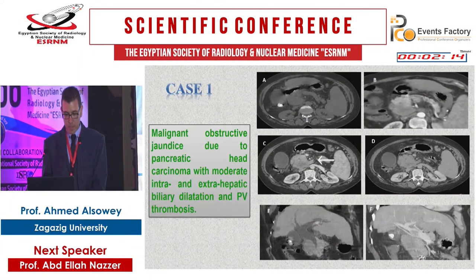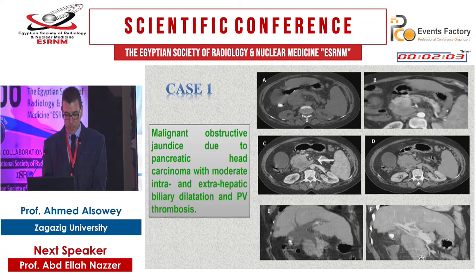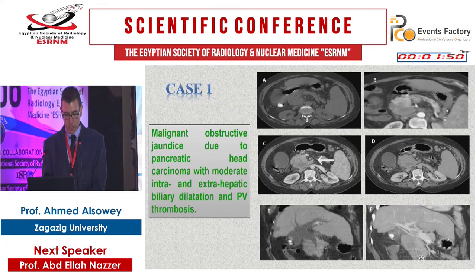This is a case of malignant obstructive jaundice due to a pancreatic head mass, shown on axial pre-contrast, arterial, portal venous, and delayed phase images. The coronal minimum intensity projection revealed dilatation of the common bile duct down to its distal end as well as partial filling defect within the portal vein. This represents malignant obstructive jaundice due to pancreatic adenocarcinoma with moderate biliary obstruction and portal vein thrombosis.